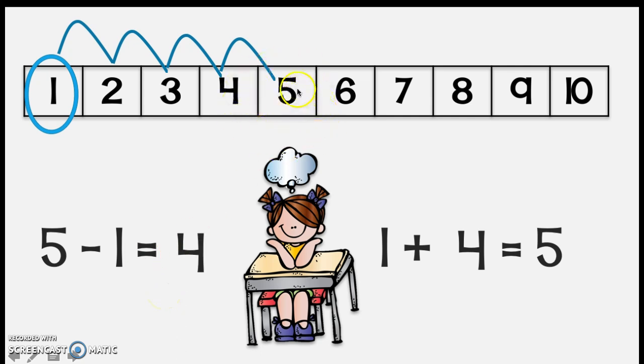I could say 5 and go back 1 to get to 4. Aha that's perfect because the difference between 1 and 5 are all these jumps. So the difference is 4. All right let's try another one.